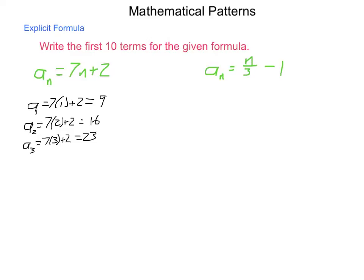And continuing on, we end up with this sequence of numbers in total. We have 9, 16, 23, 30, 37, 44, 51, 58, 65, and 72. The nice thing about an explicit formula like this is that if I want the 20th term,